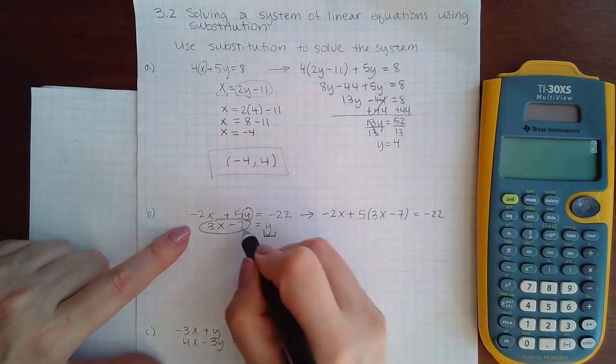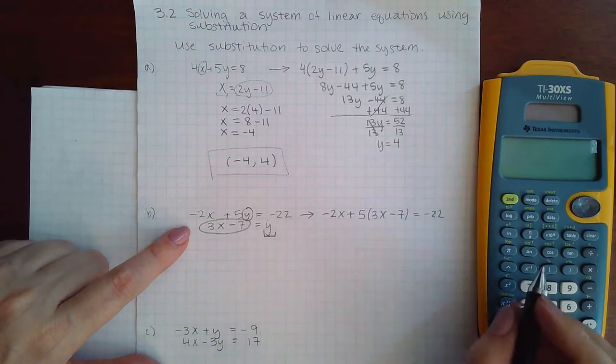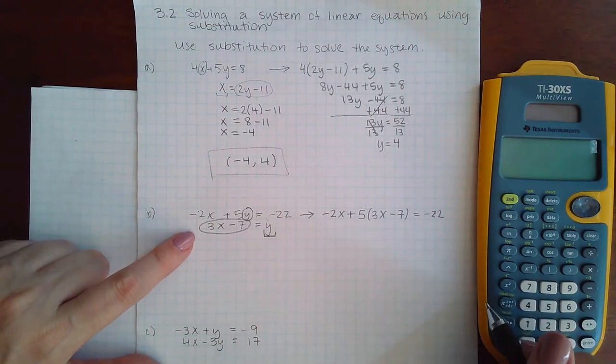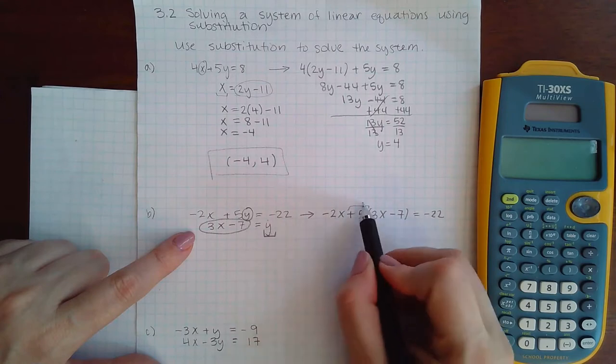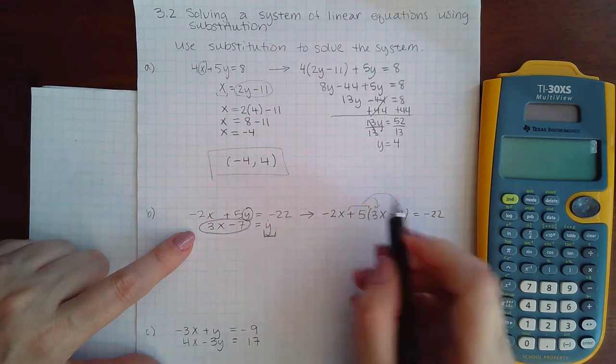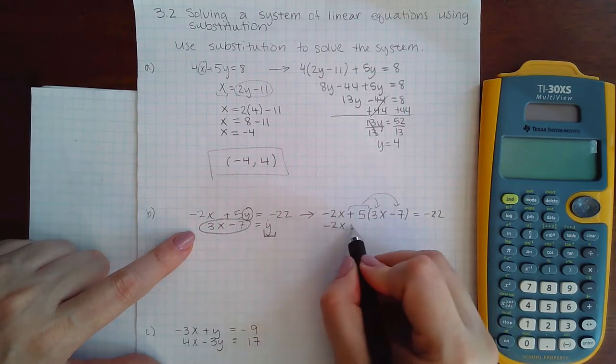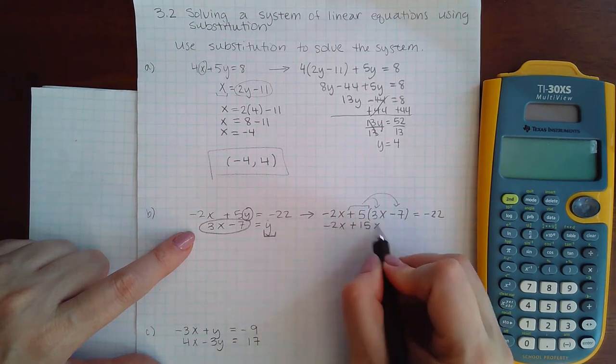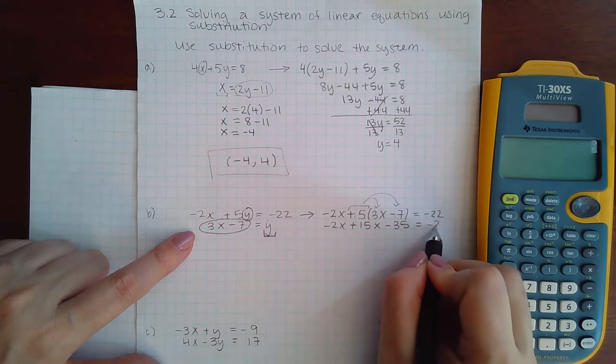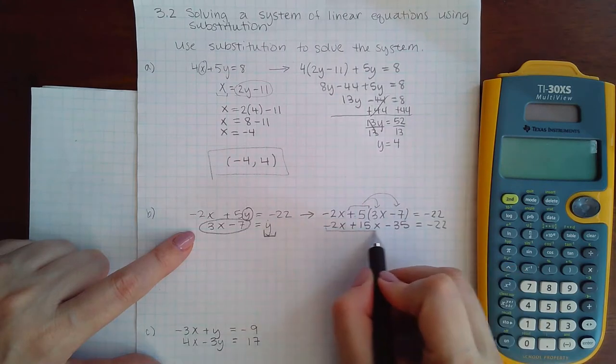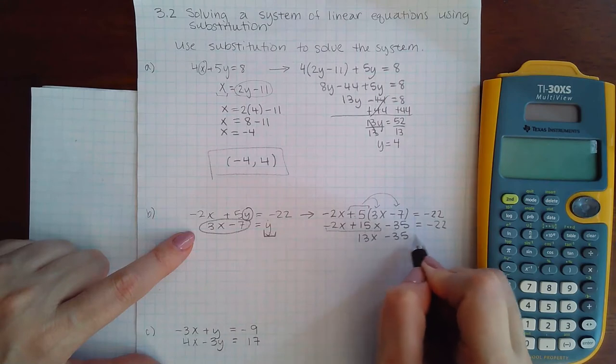And it's still equal to negative 22. Now I can distribute, remember you have to multiply before you can add. So I've got to distribute this. Positive 15x, positive times a negative is negative 35. Combine my like terms, I get 13x minus 35 equal to negative 22.